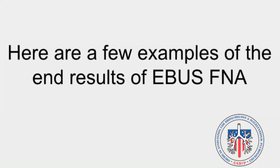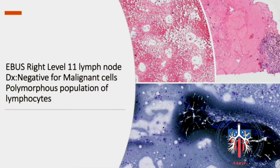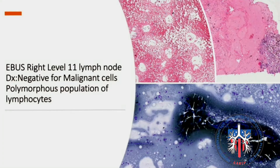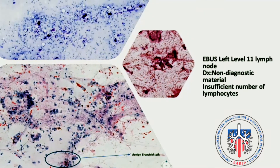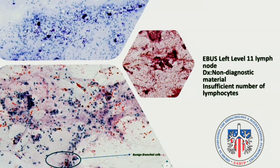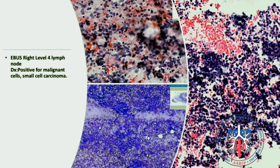Here are a few examples of the end results of EUS-FNA. 11R node: negative for malignant cells in a normal population of lymphocytes. 11L lymph node: non-diagnostic material, insufficient for lymphocytes. 4R node: positive for small cell carcinoma.